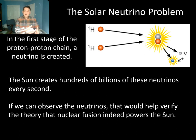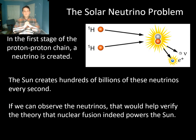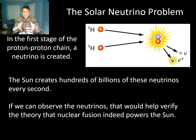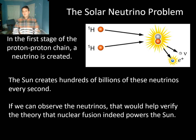Neutrinos went undetected for a long time because they're neutral, so they don't interact through the electromagnetic force, and they have extremely low mass, so they don't interact meaningfully through gravity. The only fundamental force through which neutrinos interact is the weak nuclear force, and as the name suggests, it's weak. This makes neutrinos really hard to observe in general.